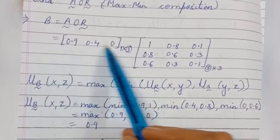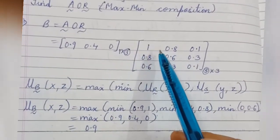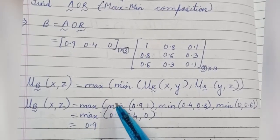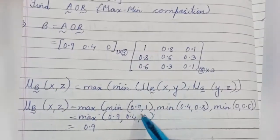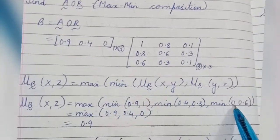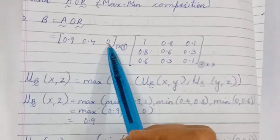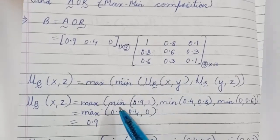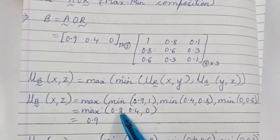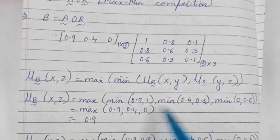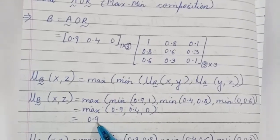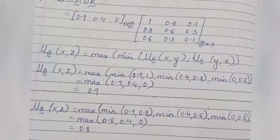For the first element, consider the first row of A and the first column of R. μ_B(x, z) = max{ min(0.9, 1), min(0.4, 0.8), min(0, 0.6) }. Taking minimums: 0.9, 0.4, 0. Taking the max of these three gives 0.9. So the first element is 0.9.